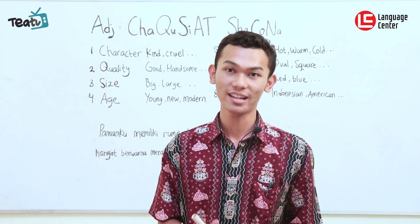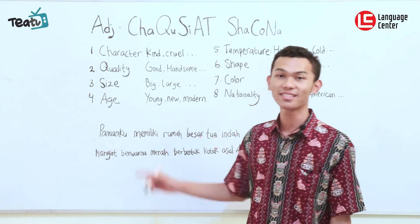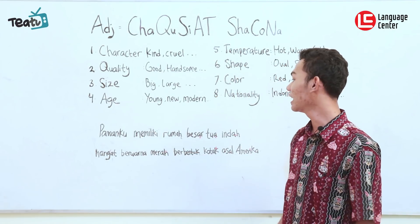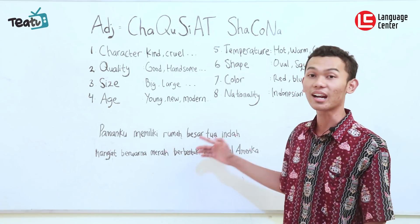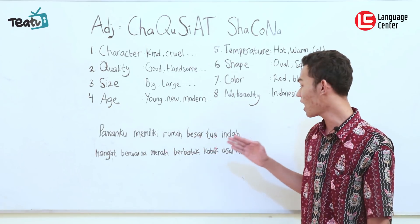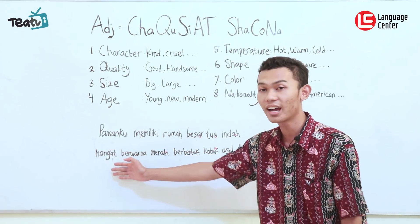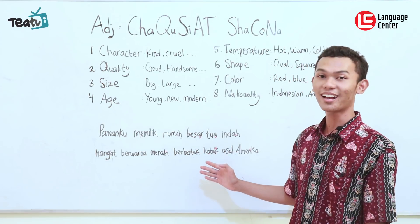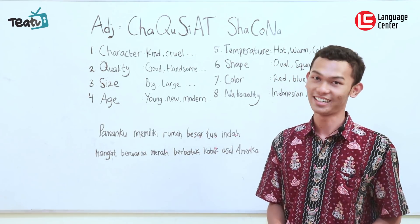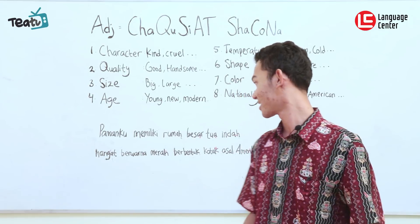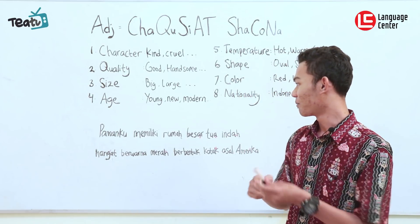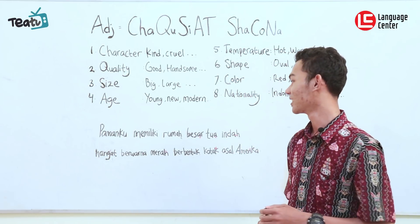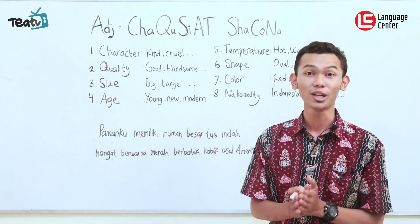Now let's do an exercise. We have one sentence: 'Pamanku memiliki rumah besar, tua, indah, hangat, berwarna merah, berbentuk kotak, asal dari Amerika.' That's quite a long sentence! Now let's do it together.